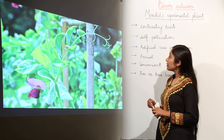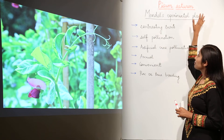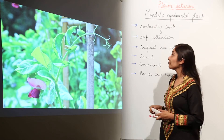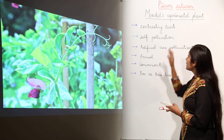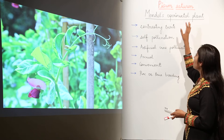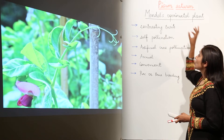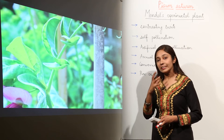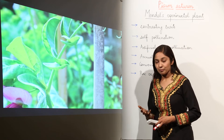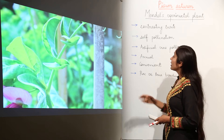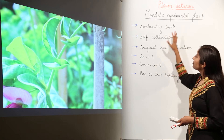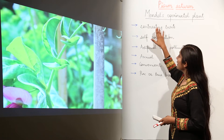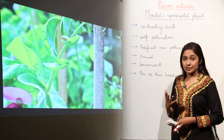Mendel's experimental plant was Pisum sativum, and this Pisum sativum was chosen by Mendel based on certain advantages. So why did Mendel choose the pea plant? First of all, it had contrasting traits.